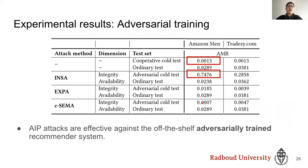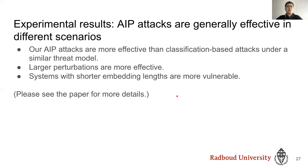Moving to adversarial training: one would expect HR@5 to be maintained, but looking at the numbers we see the same large jump that we got for INSA — other attacks behave very similarly, which is very interesting. We also find that our AIP attacks are more effective than classification-based attacks under a similar threat model. Larger perturbations are more effective, and systems with shorter embedding lengths are more vulnerable. Please check our paper for further details.